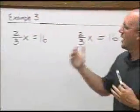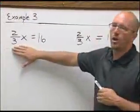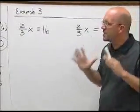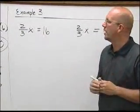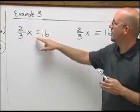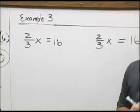If you look at a problem like this, this is where we start to get into things that are more complicated, but still the same basic rules that we've done. We have a fraction, two-thirds, that's being multiplied by our variable x, and that's equal to 16.